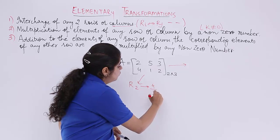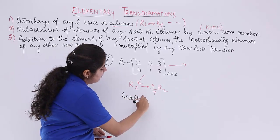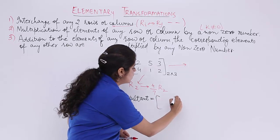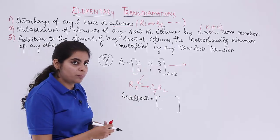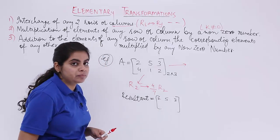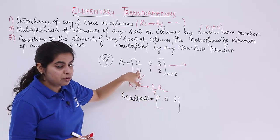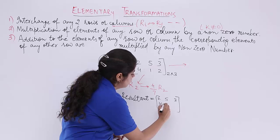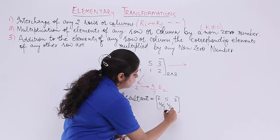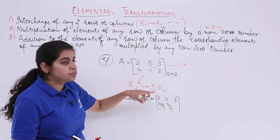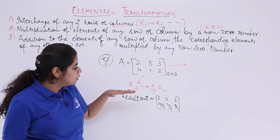With R2 = (4/7)R2, the operation is applied only on the second row; the first row is copied as is: [2, 5, 3]. For the second row: 4×(4/7) = 16/7; 1×(4/7) = 4/7; 2×(4/7) = 8/7. So the resultant matrix is [2, 5, 3; 16/7, 4/7, 8/7]. This illustrates multiplication of a row by a non-zero scalar.